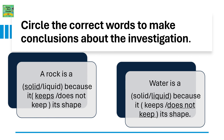Circle the correct words to make conclusions about the investigation. A rock is a solid because it keeps its shape. Water is a liquid because it does not keep its shape.